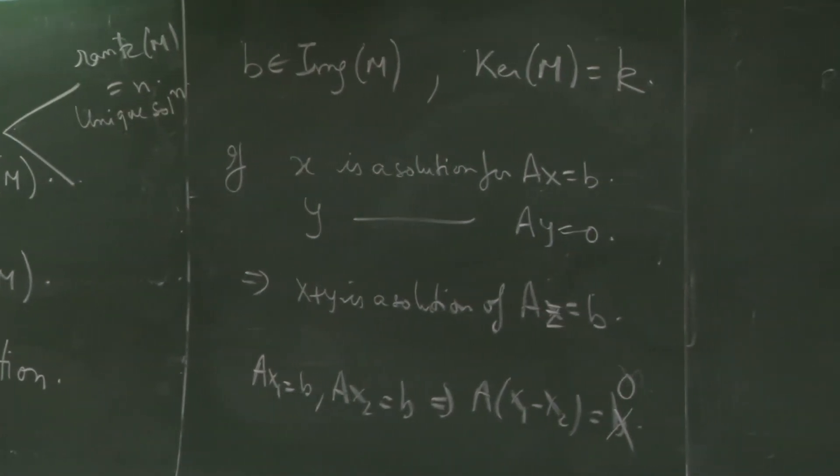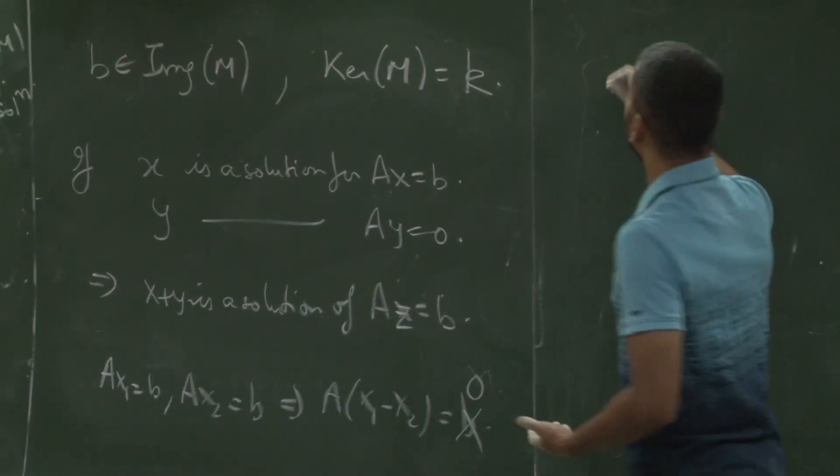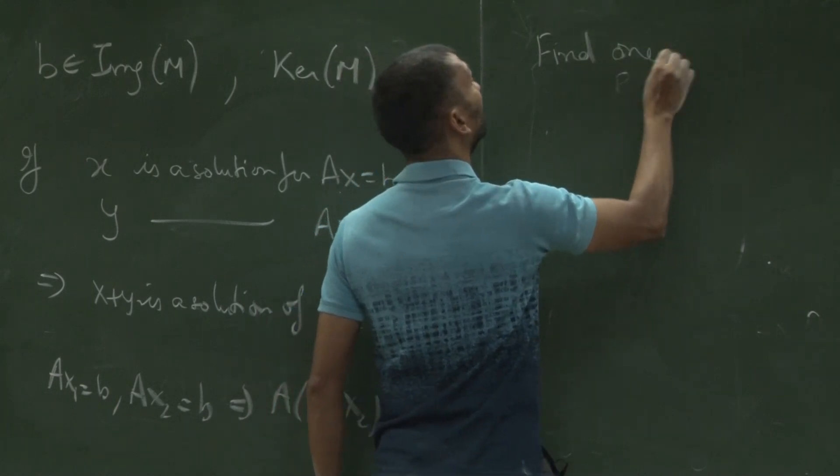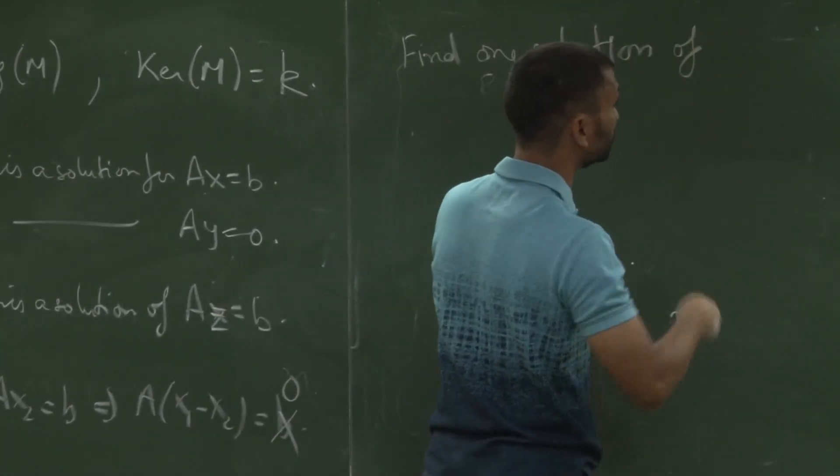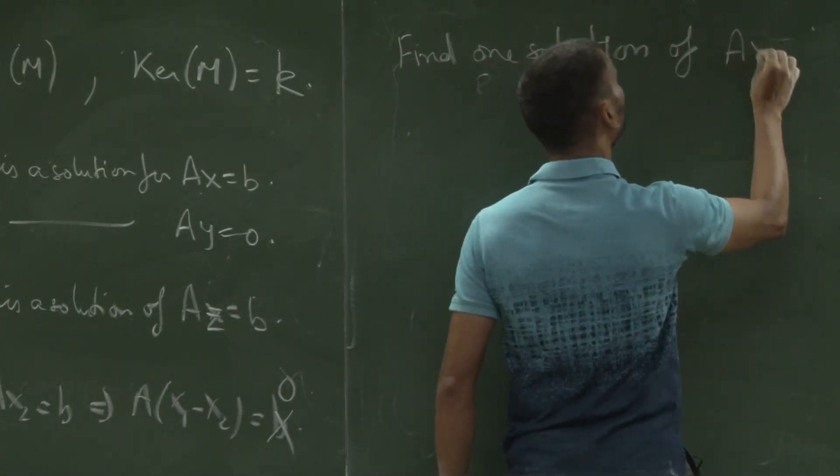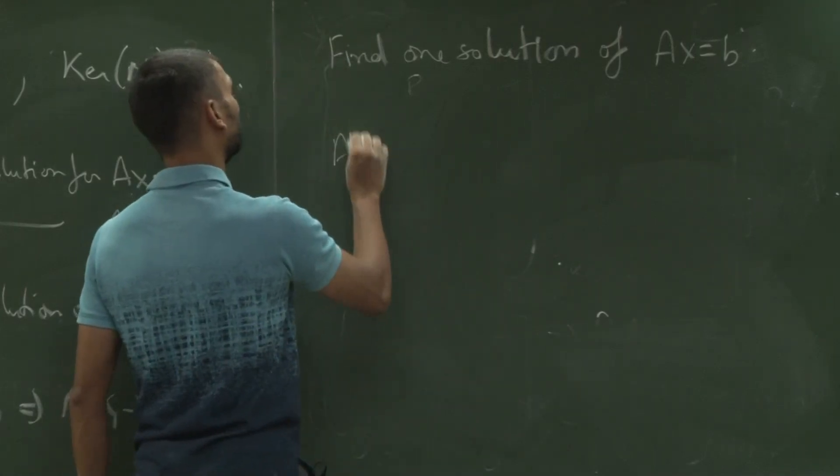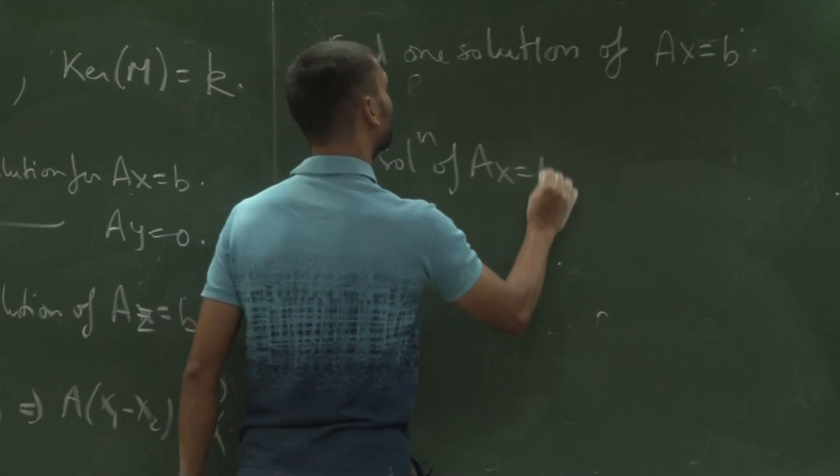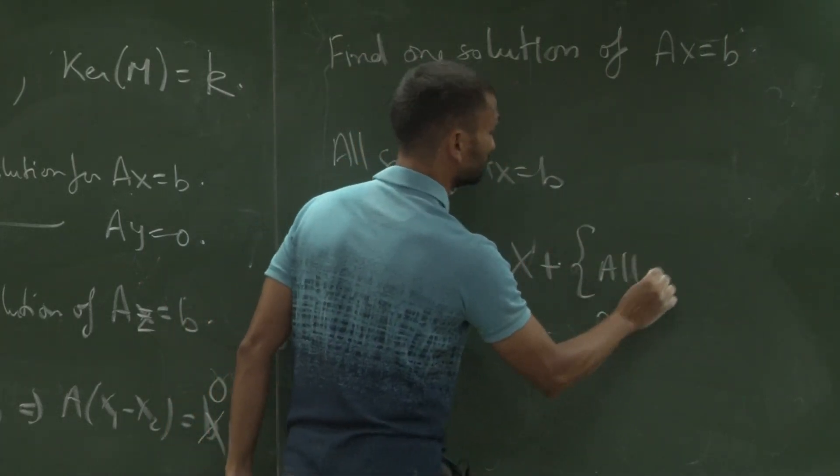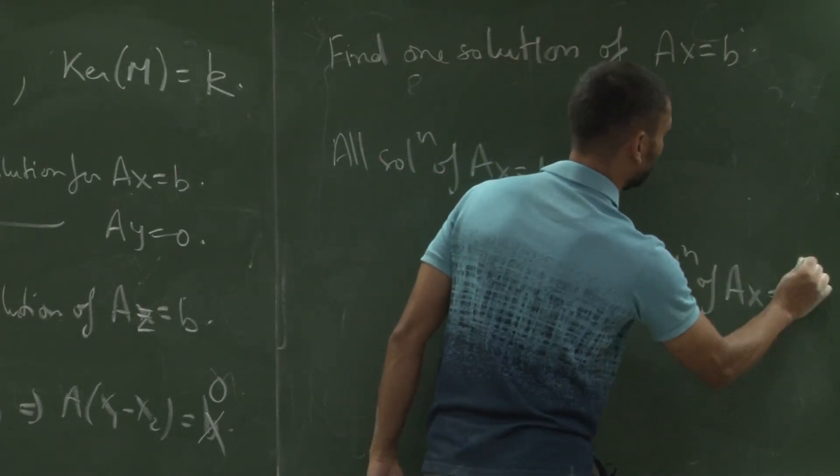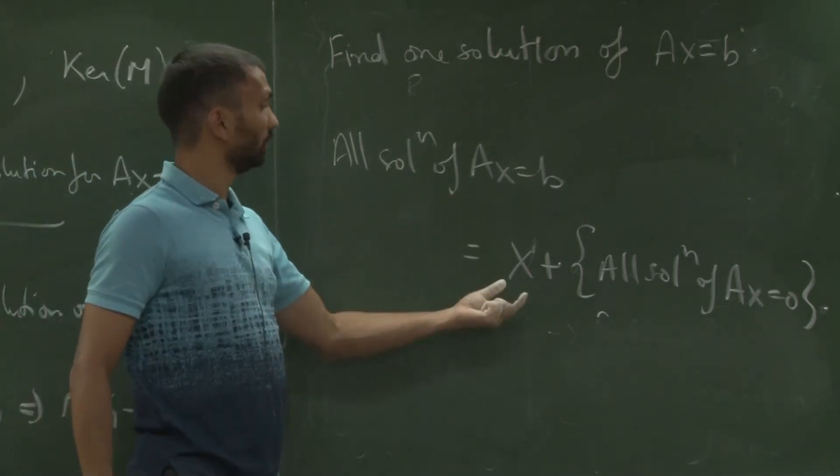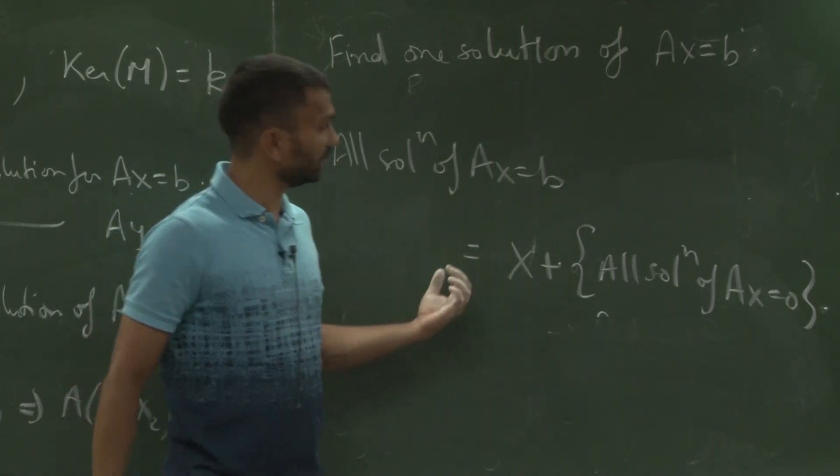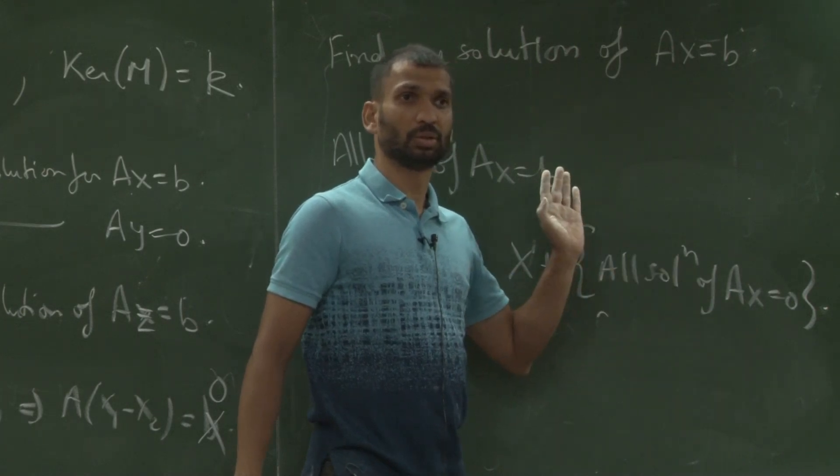That means now we have a very, very nice description of the solution set. And find one solution of Ax equal to b. And then find one solution of Ax equal to b and given this, now it is very easy to describe all solutions of Ax equal to b. You pick one solution, you pick one solution and then all solutions of Ax equal to 0 are going to be there.